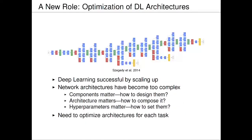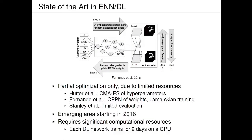Now let's move on to the new role of evolving neural networks — the optimization of deep learning architectures that are currently so popular. Deep learning has been successful by scaling up neural networks: current state-of-the-art networks in vision and language are very large, with many layers, large layers, convolution, and many different types of layers. This has become a problem — these architectures are very complex and it takes a long time to come up with one that works. What components are used, the overall topology, the hyperparameters — we can optimize all of those. This year, ideas combining evolution with deep learning have started to emerge. For instance, the architecture from DeepMind by Fernando and others uses a neural network to generate the weights of another network — a deep learning autoencoder — with Lamarckian evolution to encode weight changes back.